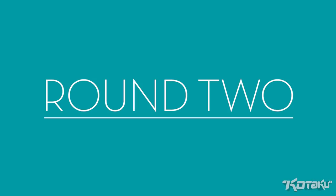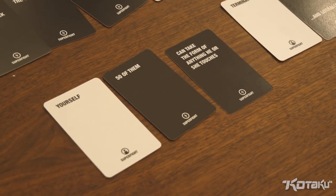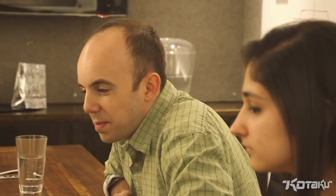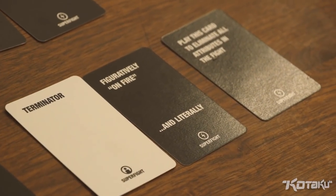50 of me can take the form of anything he or she touches. Against a terminator who is on fire, both figuratively and literally. Play this card to eliminate all attributes in the fight. So just me versus the terminator. 50 of you versus the terminator. No, this is eliminating all the attributes. So it's everybody. So I have to judge whether I think that I can beat the terminator.